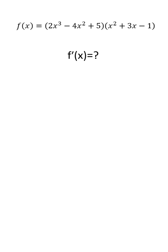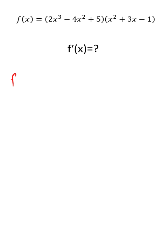To find the derivative of the two functions being multiplied, the first part is u of x and the second part is v of x.